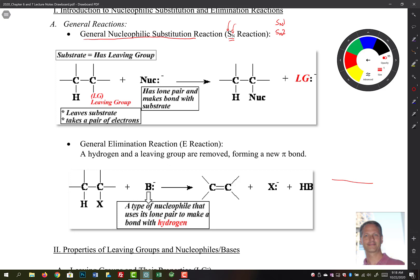Now, there's a couple key things, and the mechanisms for these are going to be different. But what you're always going to have here is a nucleophile. The nucleophile is always going to have a lone pair of electrons, and it's going to make a bond with the substrate. And here is our substrate down here.